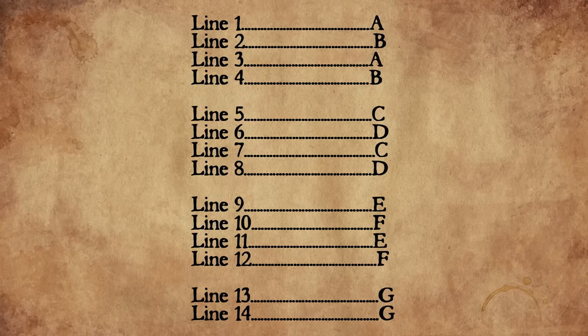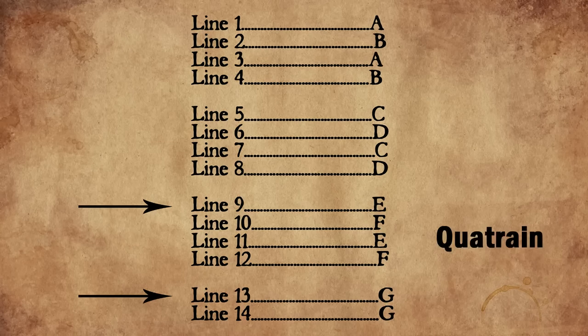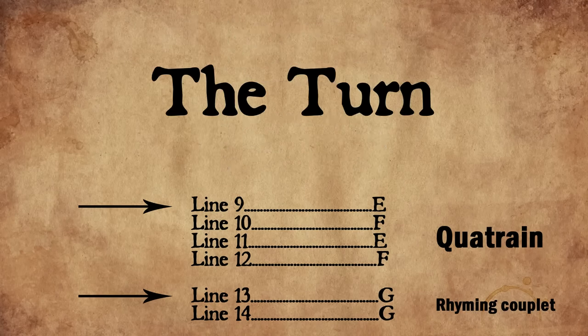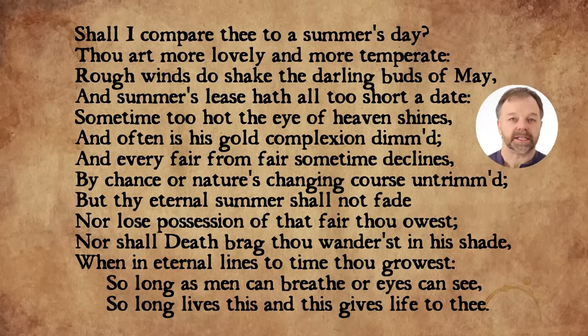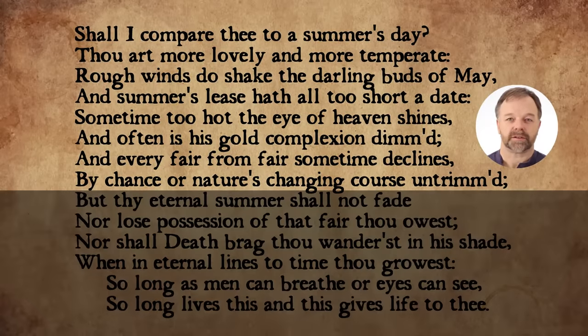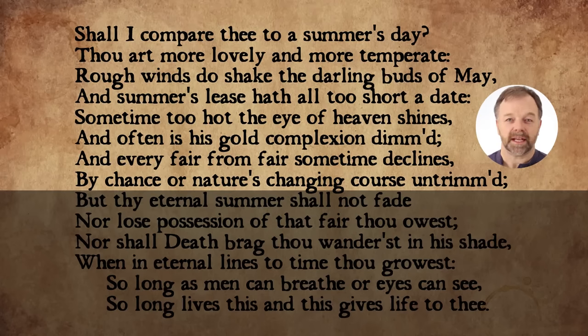There's something particular about the content that relates back to our structure. In line nine or line 13 — either the beginning of the third quatrain or the beginning of the rhyming couplet — we have something called the turn. This is where you take on a different perspective of what you're talking about. In Sonnet 18, the first two stanzas talk about this person in relation to summer, pointing out all the things they dislike about summer.